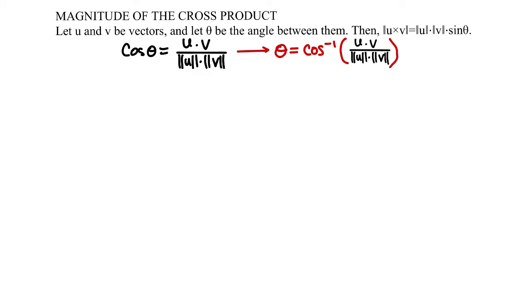We know that the magnitude of the cross product u and v is equal to the magnitude of u times the magnitude of v multiplied by the sine of theta.